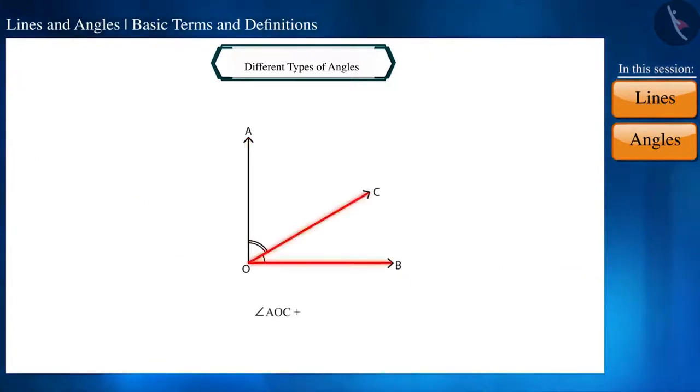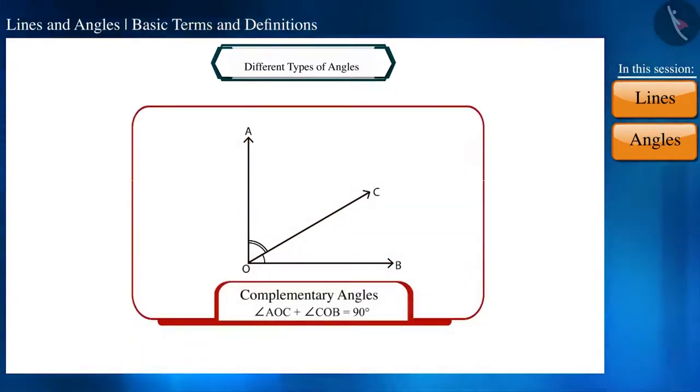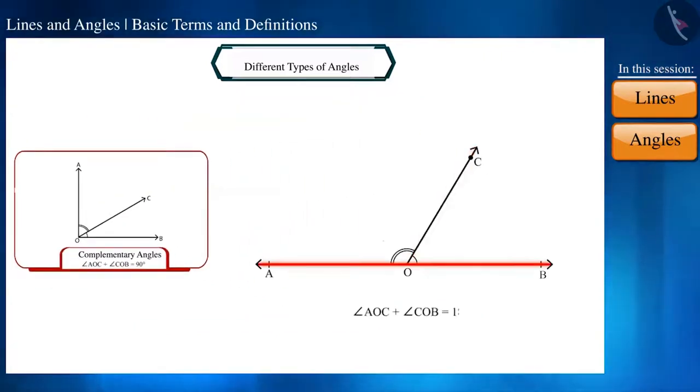Friends, if the sum of any two angles is 90 degrees then we call them complementary angles and if the sum of any two angles is 180 degrees then we call them supplementary angles.